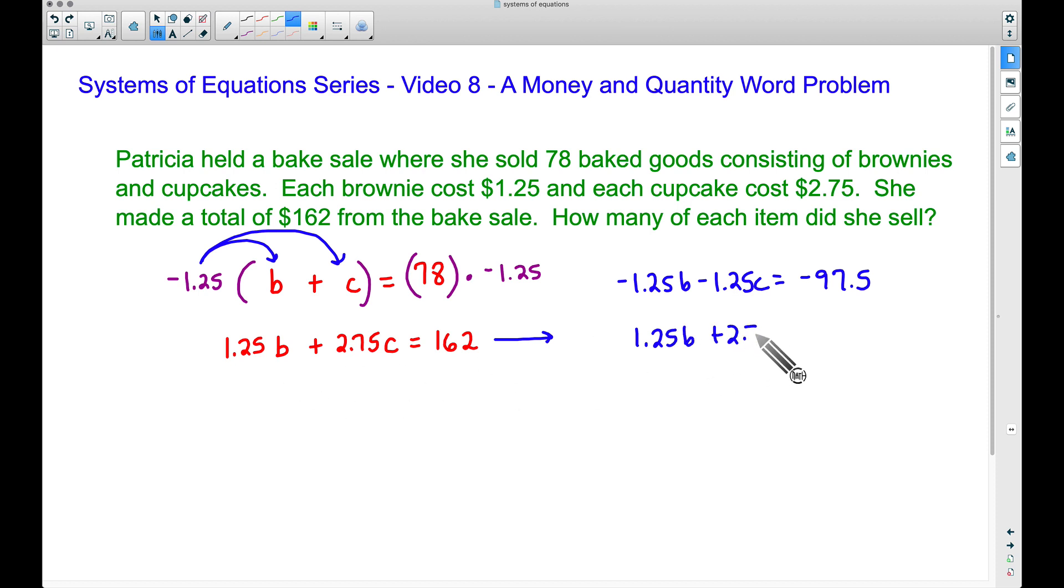Now there's no need to change this second equation. Let's just go ahead and bring this on over: 1.25b + 2.75c, and this is equal to 162. Now that we have done this, we can cancel out the b's, we can eliminate the b's, the elimination method. Let's combine these c's. Be careful with your signs. -1.25c + 2.75c is equal to a positive 1.5c.